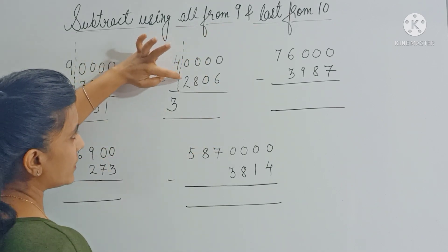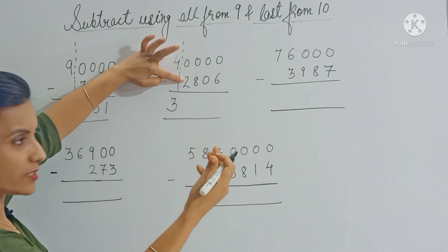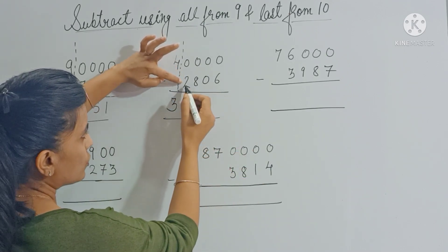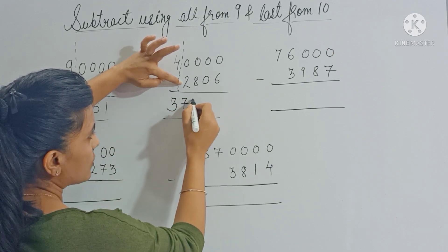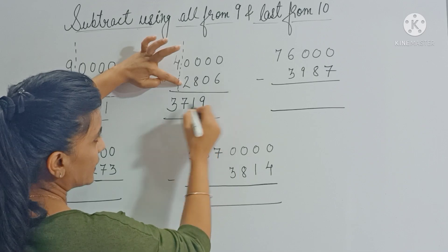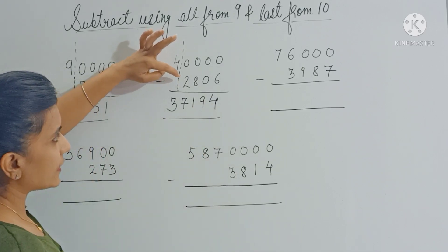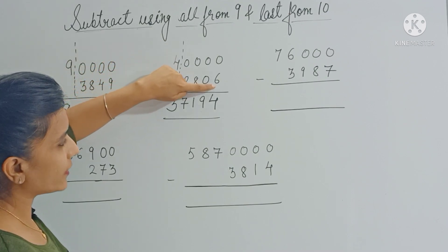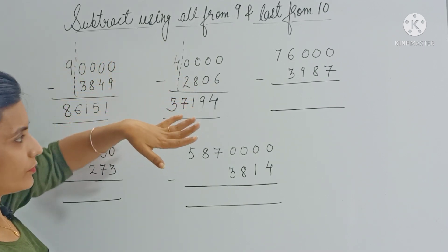Here let's do addition instead of subtracting — it's pretty fast. So 2 plus 7 gives you 9, 8 plus 1 gives you 9, 0 plus 9 gives you 9, and 6 plus 4 gives you 10. Basically, instead of subtracting all digits from 9 and 10, we use the addition trick.